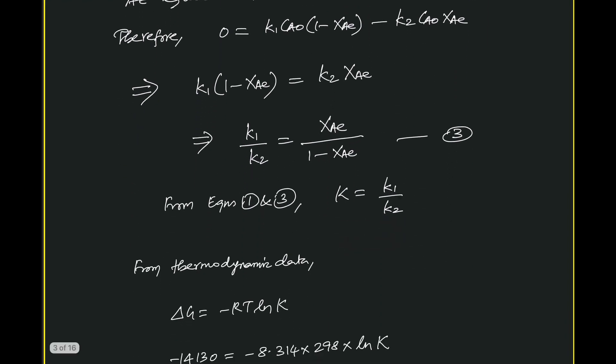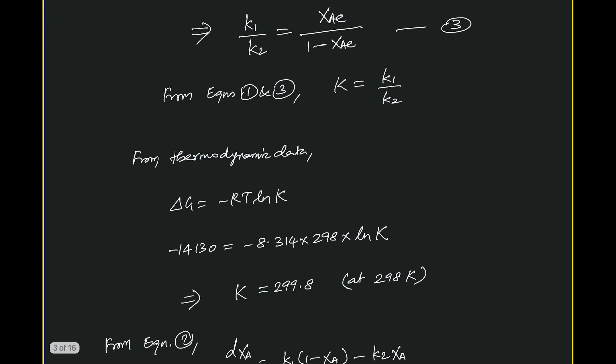We can get the value of capital K by using the thermodynamic data. From thermodynamics we know delta G equals minus RT ln K. Since delta G at 298 K is available, we can get K at 298 K. Taking the exponential of (minus delta G / RT) gives us K. So K is available at one temperature, which corresponds to the 25°C experimental data.